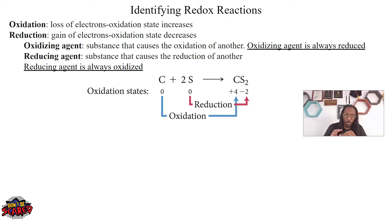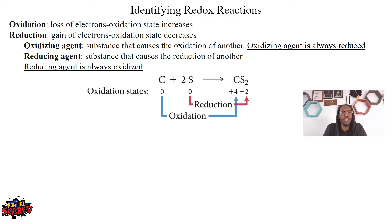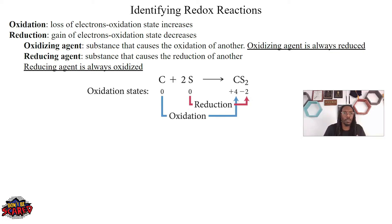Your agents are the ones doing the oxidizing or reducing. How do we know which one is an oxidizing agent versus a reducing agent? An oxidizing agent is doing the oxidation of another, but we can also tell it's the oxidizing agent because it is itself being reduced. So oxidizing agents are always going to be reduced. Reducing agents are always going to be oxidized.